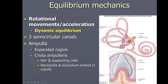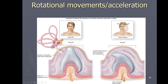Within the ampulla there's a bump called the crista ampullaris, lined with hair cells that have stereocilia and a kinocilium. On top of those hair cells is a glob of gelatinous material called the cupula — one for each semicircular canal. When you rotate your head, the cupula lags behind the hair cells, causing them to bend and generate action potentials that go to the brain telling it you're moving in a certain direction.